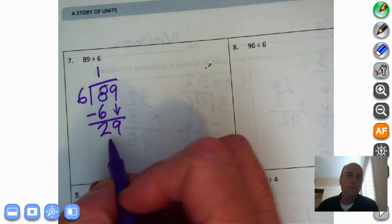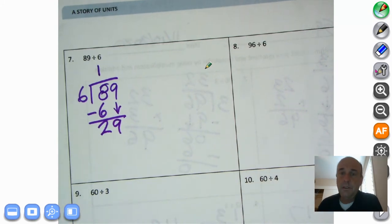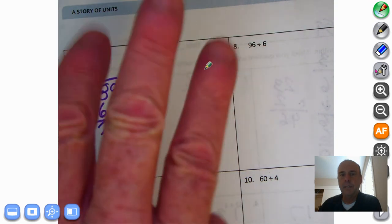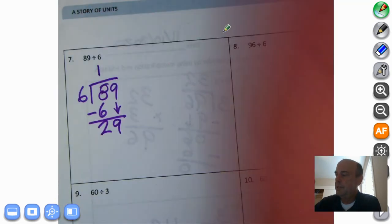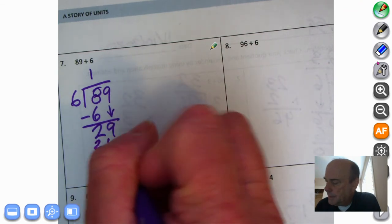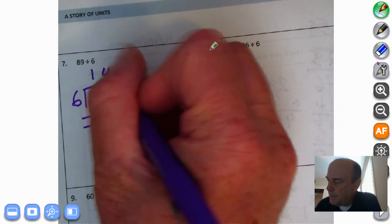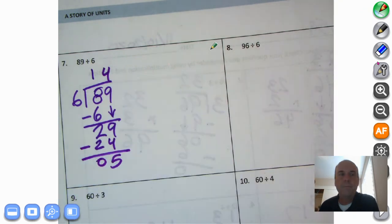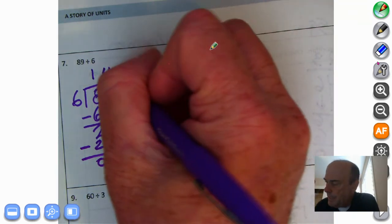How many 6s can we get into 29? Well, let's count: 6, 12, 18, 24, 30. So 6 times 1 is 6, 6 times 2 is 12, 6 times 3 is 18, 6 times 4 is 24. That's all the 6s we can get in, because 6 times 5 would be 30. We subtract, 9 minus 4 is 5, and 2 minus 2 is 0. So it looks like it's 14, remainder 5.